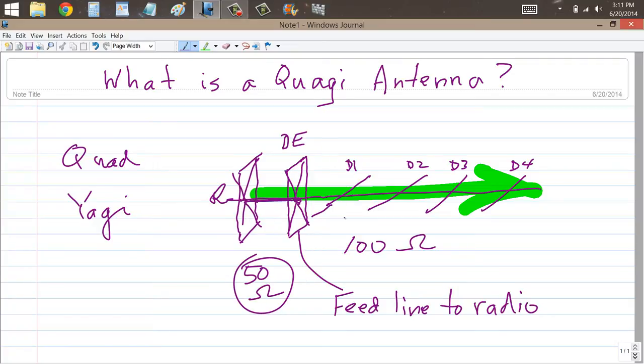But when you add a reflector and a director to the driven element and get a three-element quad, according to this viewer, if I'm not mistaken in what he said, you get more nearly a 50 ohm match to the radio, and that's an advantage of the quad over a Yagi.